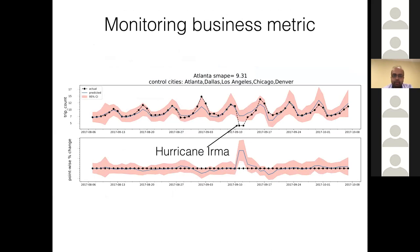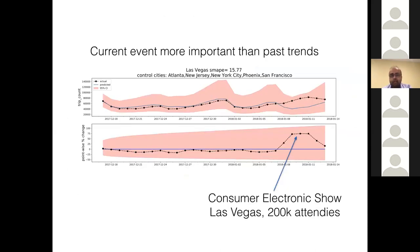Here's another example: the Hurricane Irma case, where you can see a clear deviation from normal behavior — those two or three days in Atlanta where, because of the natural weather disaster, the number of trips went down. Not only weather — current events can also have an impact. For example, looking at Las Vegas, the difference between actual and predicted is more or less in line, except for the three days when the Consumer Electronics Show happened in Las Vegas, drawing more than 200,000 attendees in that brief period of time, which means a lot more trips.